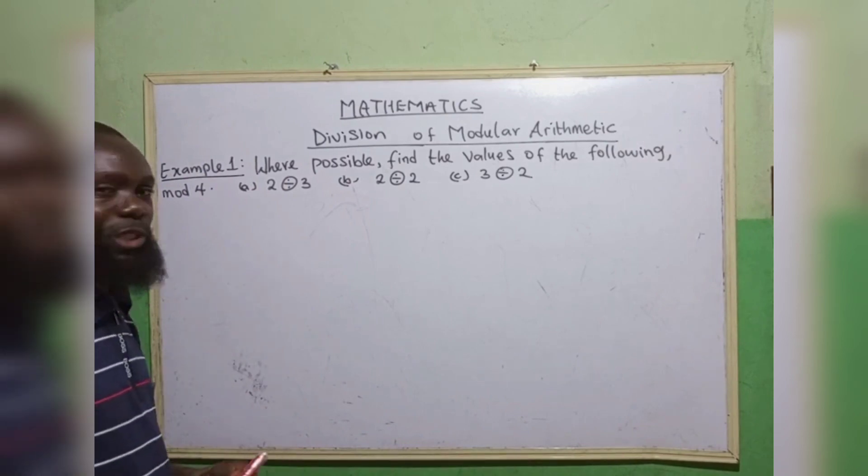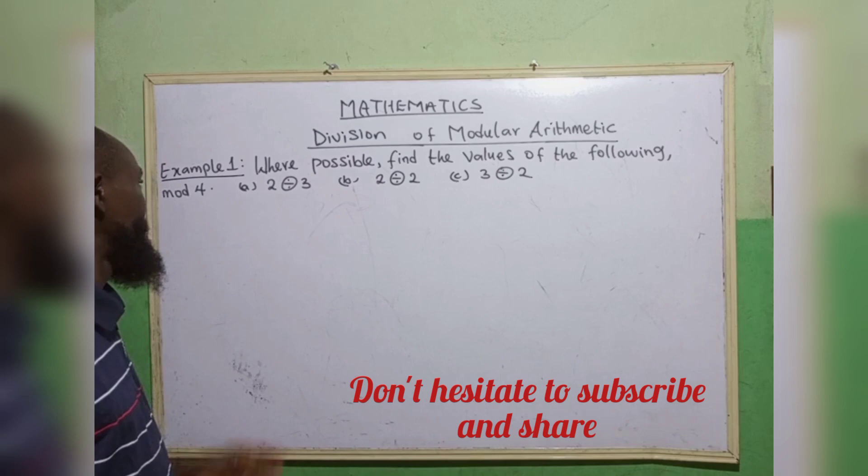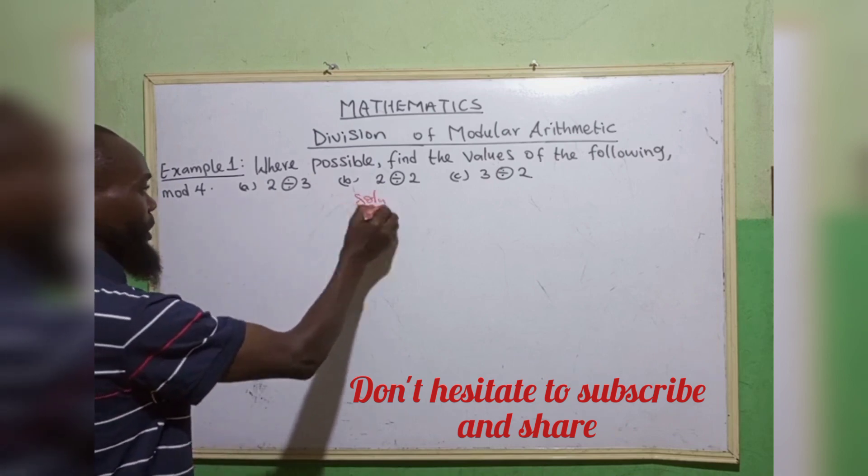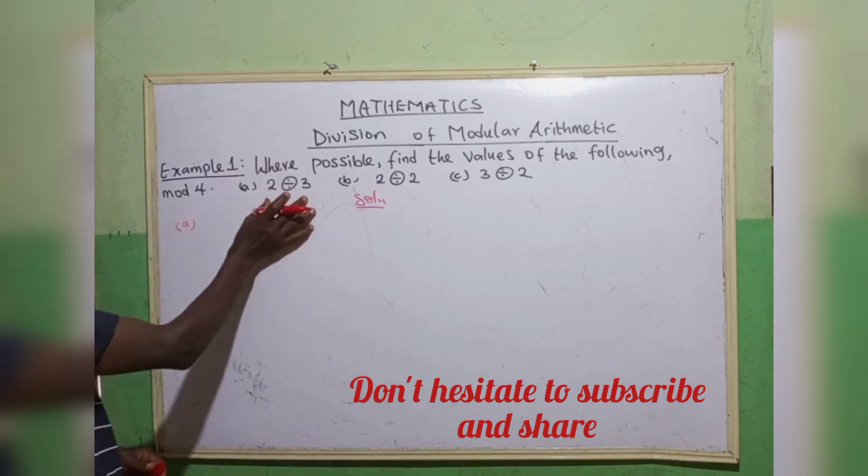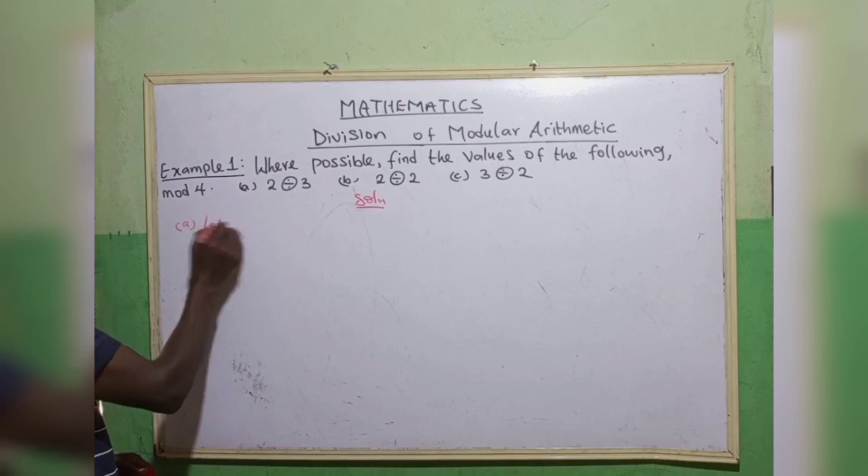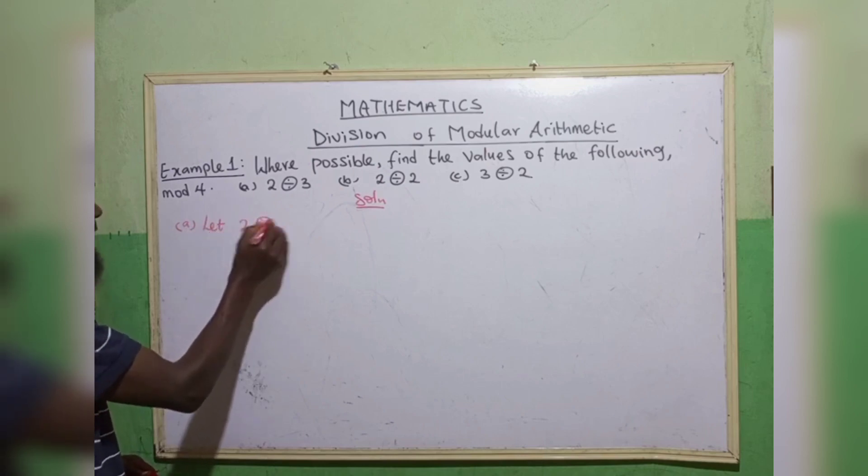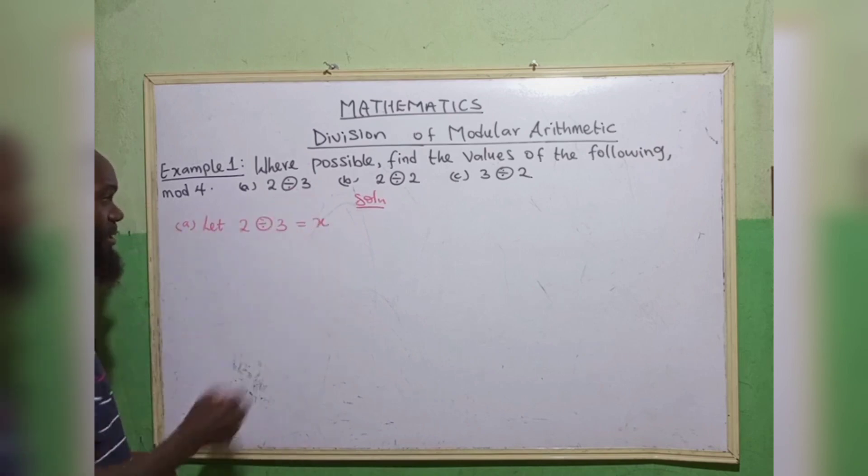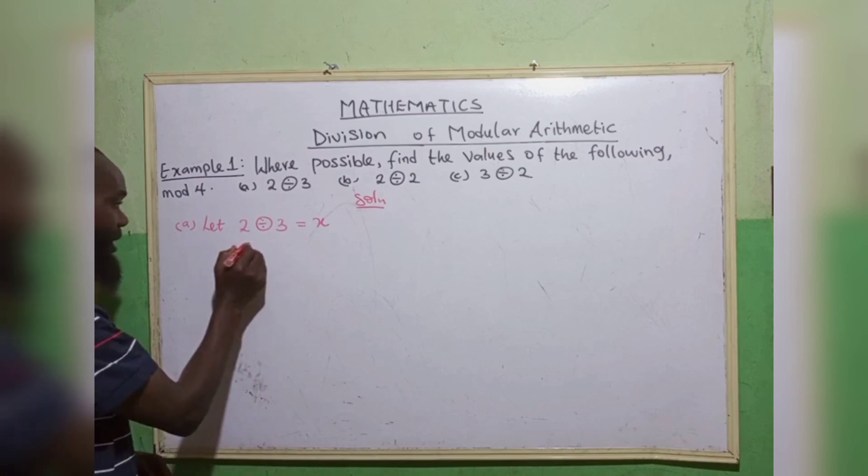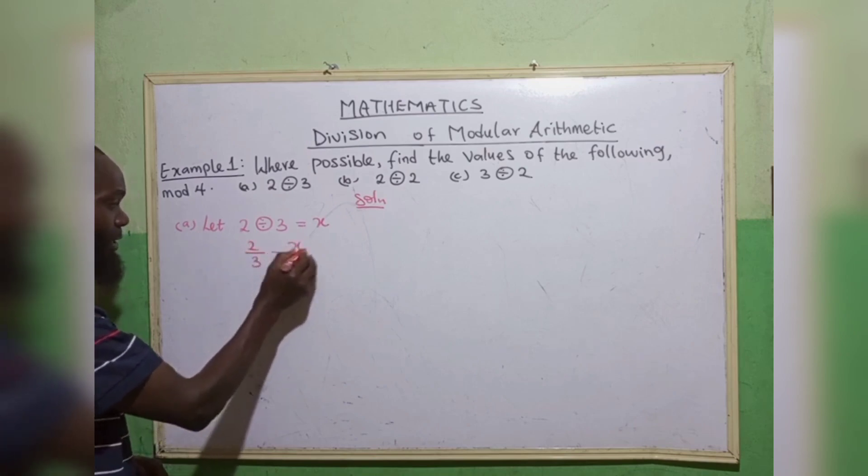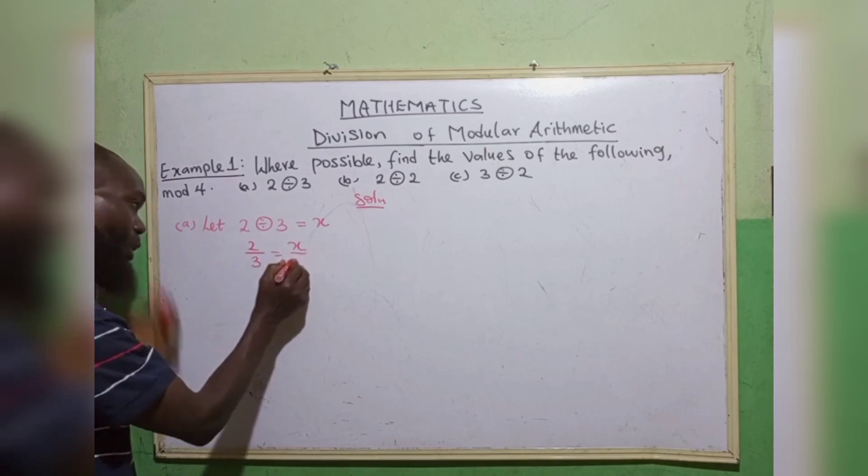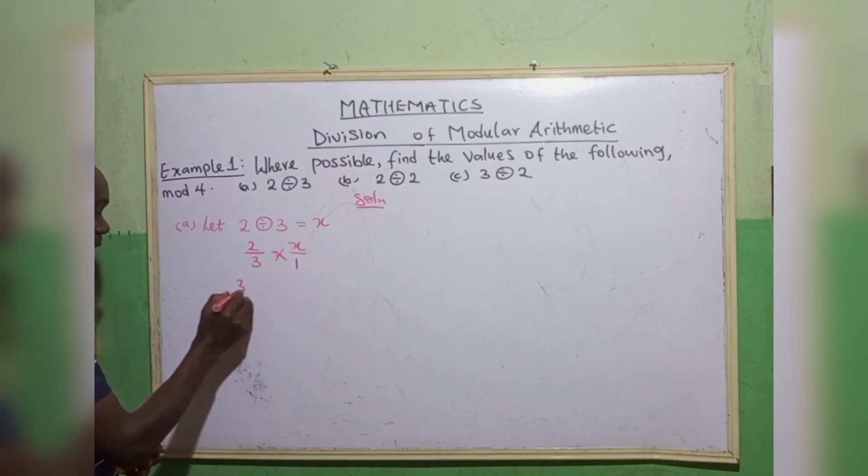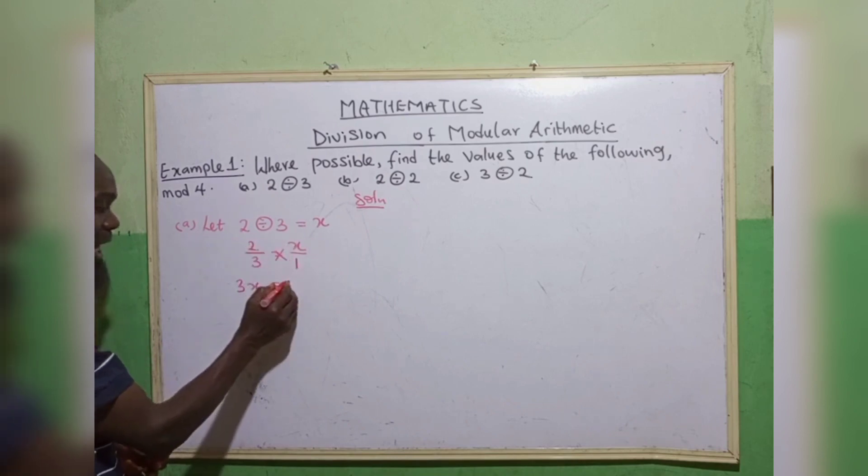Example 1: where possible, find the values of the following in mod 4. The first one, let 2 divided by 3 equals to an unknown letter x. So 2 divided by 3 can be written as 2/3 = x/1. Let us cross multiply. So 3 multiplied by x, we have 3x, is equal to 2 multiplied by 1, we have 2.